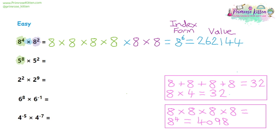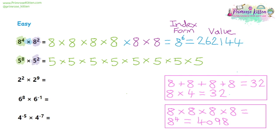Moving on to the next question: here we have five to the eight, which means five times five times five times five times five times five times five times five — eight times. And we're going to multiply that by five to the power of two, so five times five, two fives. Then we multiply those together. There's no difference between those green fives and those dark purple fives, so we can just count all of the fives up and that is five to the power of 10.